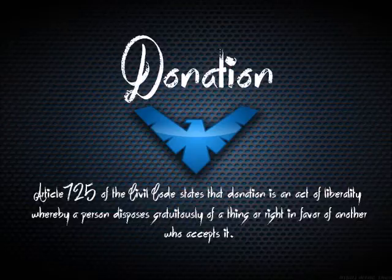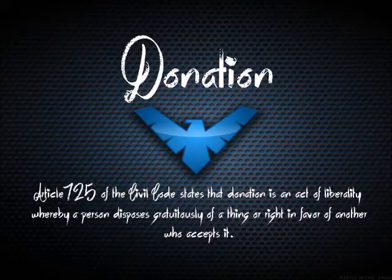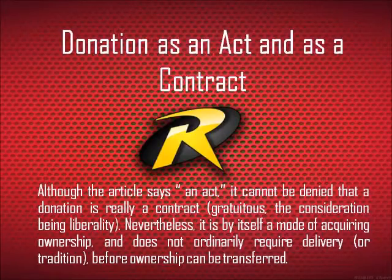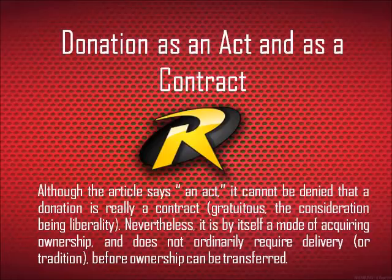Moving on, our next topic is Donation. Article 725 of the Civil Code states that a donation is an act of liberality whereby a person disposes gratuitously of a thing or a right in favor of another who accepts it. Although the article says it is an act, it cannot be denied that a donation is really a contract. It is gratuitous, the consideration being liberality. Nevertheless, it is by itself a mode of acquiring ownership and does not ordinarily require delivery before ownership can be transferred.